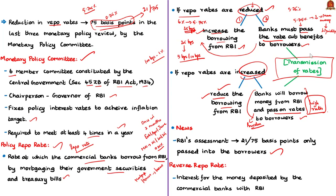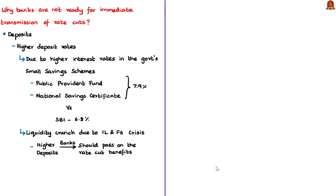The reverse repo rate is the interest rate that the RBI pays to commercial banks when they deposit money with it. The main reason banks are not passing on rate cuts is that deposit rates have remained high. The government's small savings schemes such as PPF and National Savings Certificate offer interest rates of 7.9%, compared to SBI's deposit rate of just 6.8%.